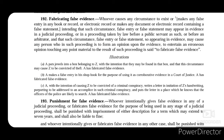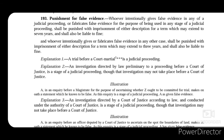Sections 193 to 195 provide punishment for giving or fabricating false evidence. Section 193 says that whoever intentionally gives false evidence in any judicial proceeding, or fabricates false evidence for use in any stage of a judicial proceeding, shall be punished with imprisonment for a term which may extend to 7 years and shall also be liable to fine. Whoever does so in any other case shall be punished with imprisonment for a term which may extend to 3 years and shall also be liable to fine.